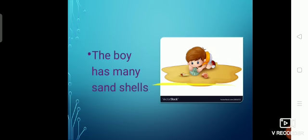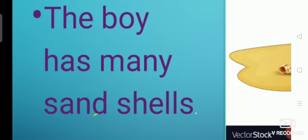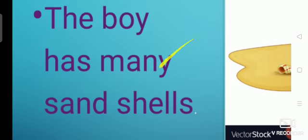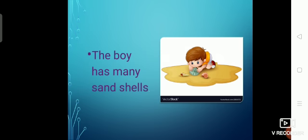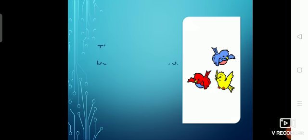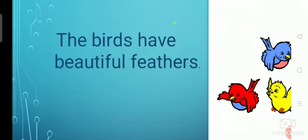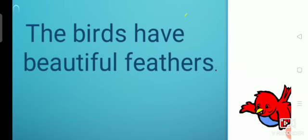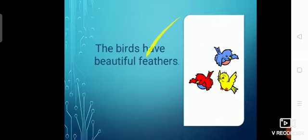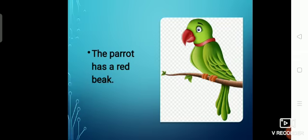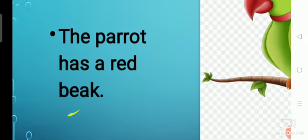You can see a boy in the picture. The boy has many sand shells. Next, you can see birds in the picture — the birds have beautiful feathers. Next we can see a parrot in the picture. The parrot has a red beak.